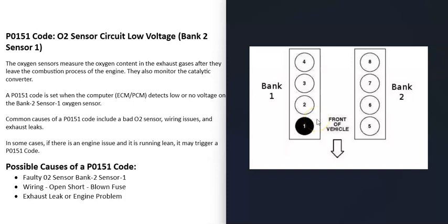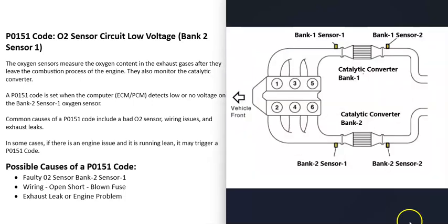Bank 1 is always the side of the engine with the number one cylinder. If you Google your engine's cylinder location or firing order, you can locate which side the number one cylinder is on, since there are differences between engines. That side is bank 1, and the opposite side is bank 2.